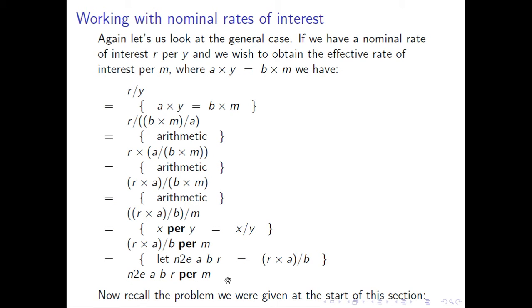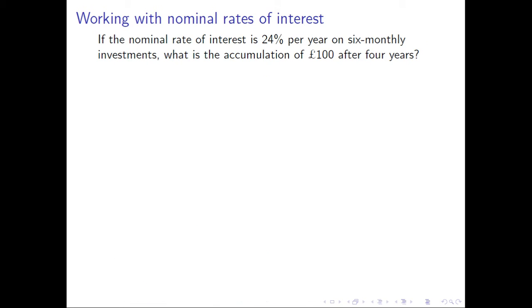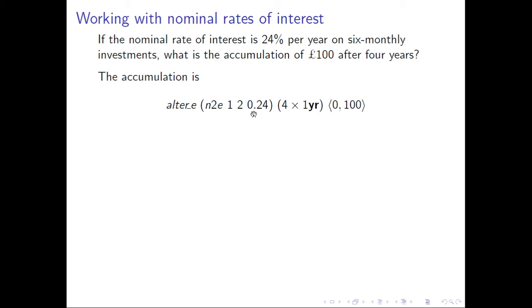Now, remember the problem we were given at the start — let's see if we can solve it. If the nominal rate of interest is 24% per year on six-monthly investments, the accumulation of 100 pounds after four years is alter_e(n2e(1, 2, 0.24), 4×1 year, 100 at zero). We need to convert the nominal rate to an effective rate. Given that one year equals 2×six months, the effective rate is n2e(1, 2, 0.24), which is 24%.